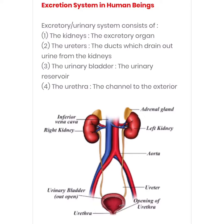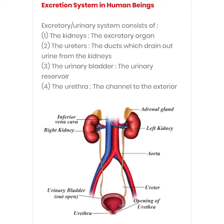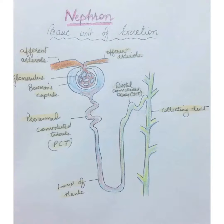The human excretory system consists of a pair of kidneys and a pair of ureters. Ureters are ducts which drain out urine from the kidneys. Then there is the urinary bladder, which is the urinary reservoir where urine is stored temporarily, and the urethra, which is the channel for the removal of urine to the exterior.